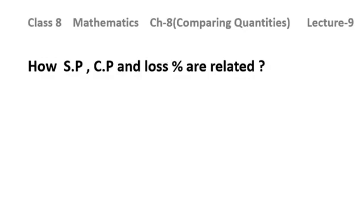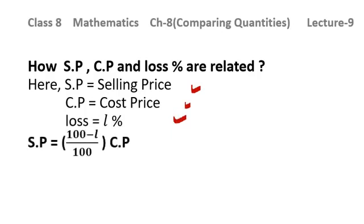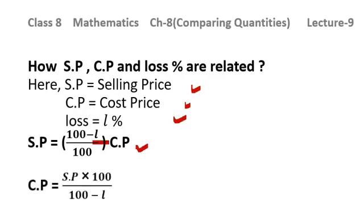Coming to SP, CP, and loss percentage: SP = (100 − L) / 100 × CP, where L is the loss percentage. If I write the same formula in terms of CP: CP = SP × 100 / (100 − L). These are the formulas relating SP, CP, and loss percentage. You can use these formulas or solve in your own way.